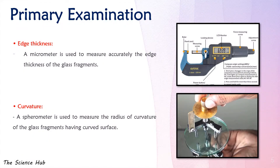For edge thickness, a micrometer is used to accurately measure the edge thickness of glass fragments. For curvature, a spherometer is used to measure the radius of curvature of glass fragments having curved surfaces.